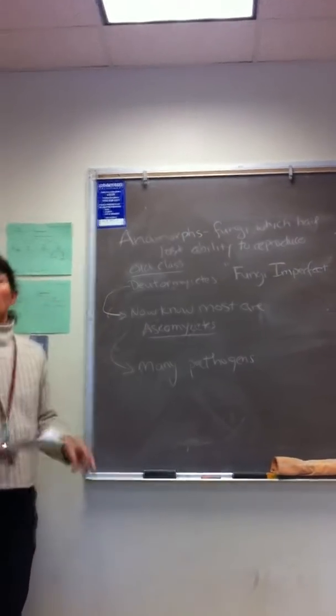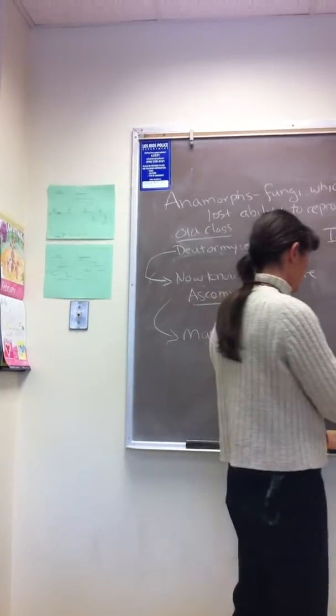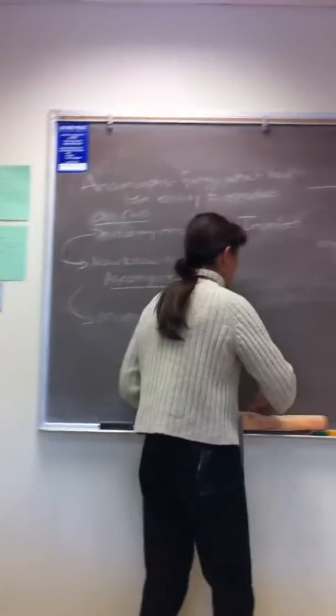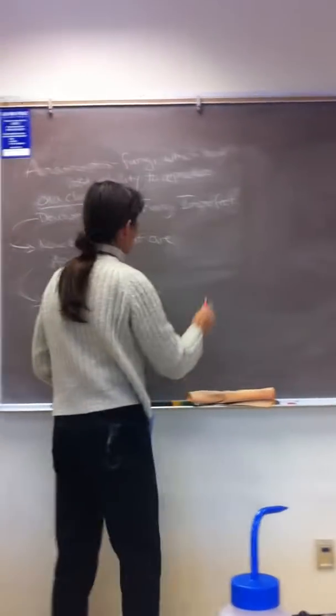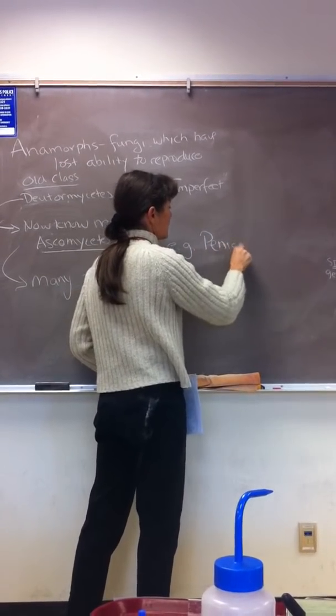So, one example of an anamorph that you guys are going to be looking at today is Penicillium. Penicillium only reproduces asexually. So an example is the fungus Penicillium.